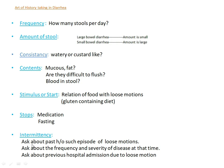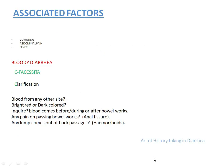Then comes intermittency. Usually in exams, patients have recurrent episodes of diarrhea, so ask about the past history of such episodes of loose motions, about the frequency and severity of disease at that time, and also ask about previous hospital admissions due to loose motions. Then comes the associated factors — ask about vomiting, abdominal pain, and fever. If a patient says yes about one of them, you will take a detail of that associated factor.